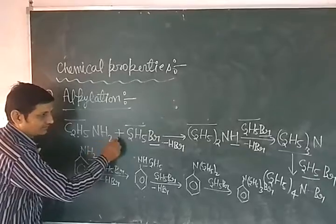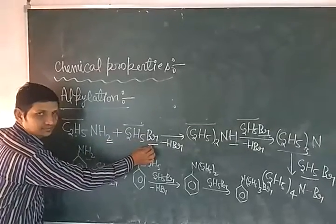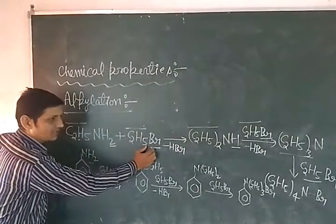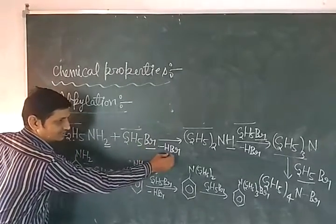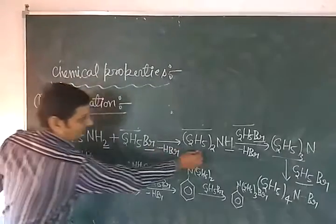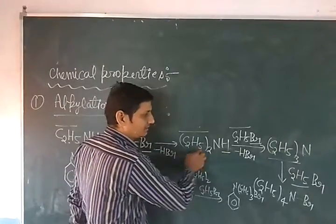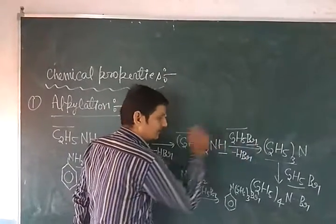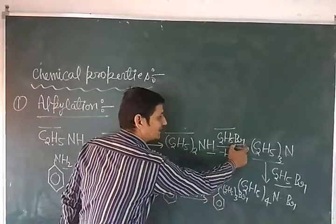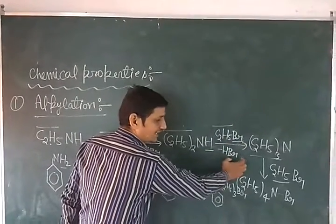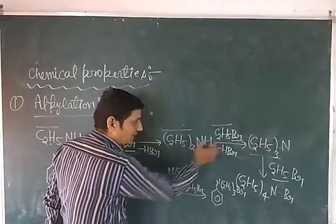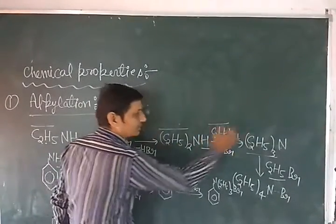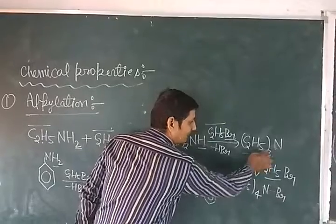Ethyl amine reacts with ethyl bromide. Then H and Br combine to release HBr and here diethyl amine is formed. Diethyl amine reacts with C2H5-Br. Again H and Br combine to form HBr and here C2H5 groups combine to give triethyl amine.